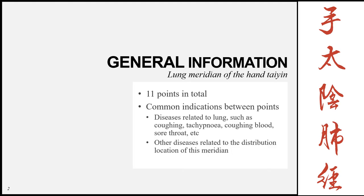Now let's look at the general information on this meridian. This meridian's full name is the Lung Meridian of the Hand, Tai Yin. This gives us a lot of information, because all meridians have an intrinsic relationship with their associated organ, and they can also be used to treat conditions along the pathway through which the meridian flows. The 'lung meridian' part tells us this meridian is linked with the lung and can treat lung-associated conditions.